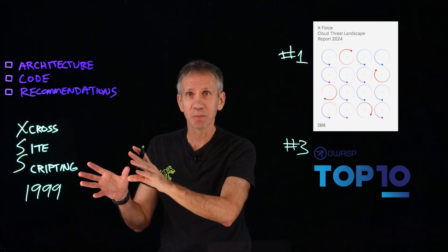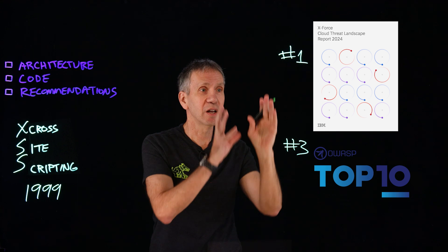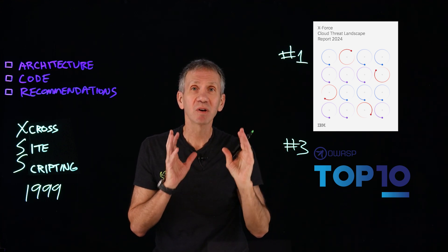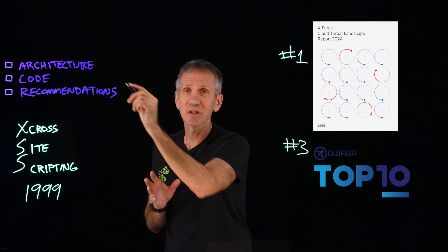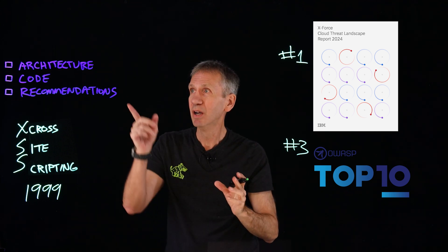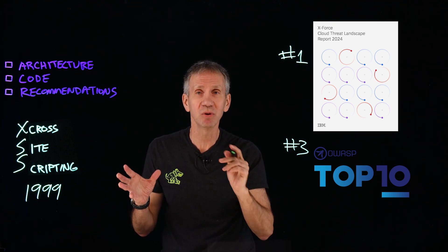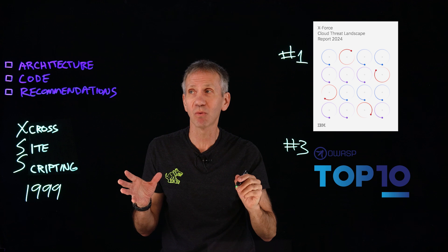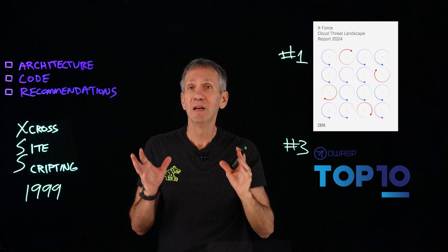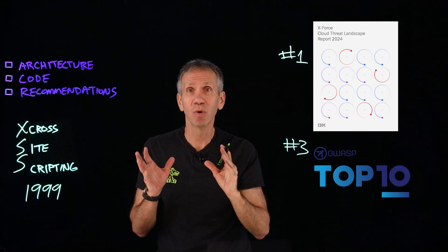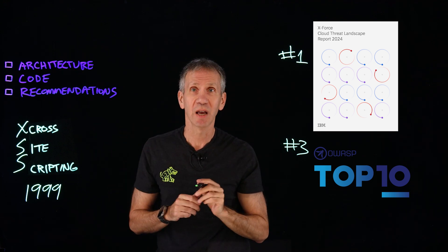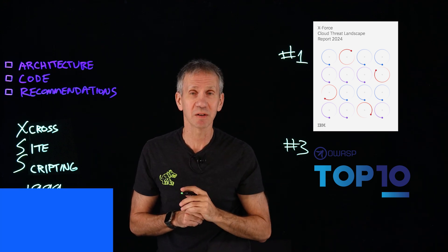So why is an attack that's been around this long still affecting us in a major way today? We're going to take a look at this attack and try to understand the architecture, the anatomy. We're going to peel it apart, look at a coding example so you can see how the attack works, and then take a look at some recommendations — things we can do that I hope will one day make these numbers disappear when it comes to XSS, cross-site scripting.